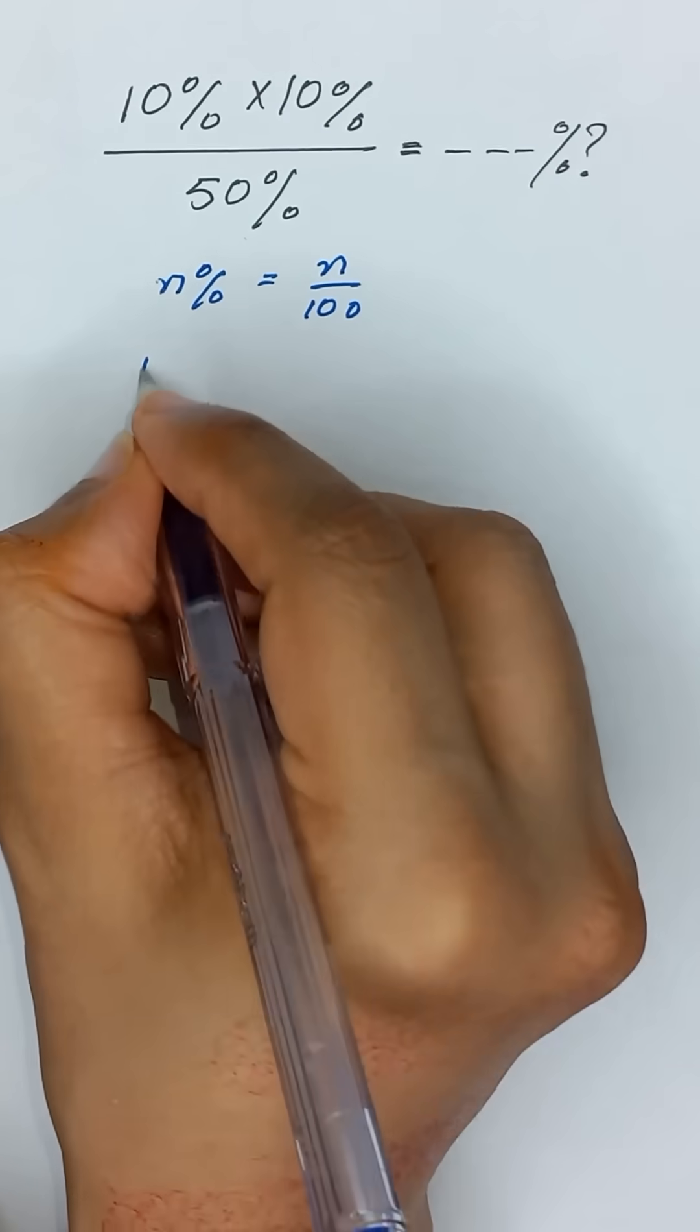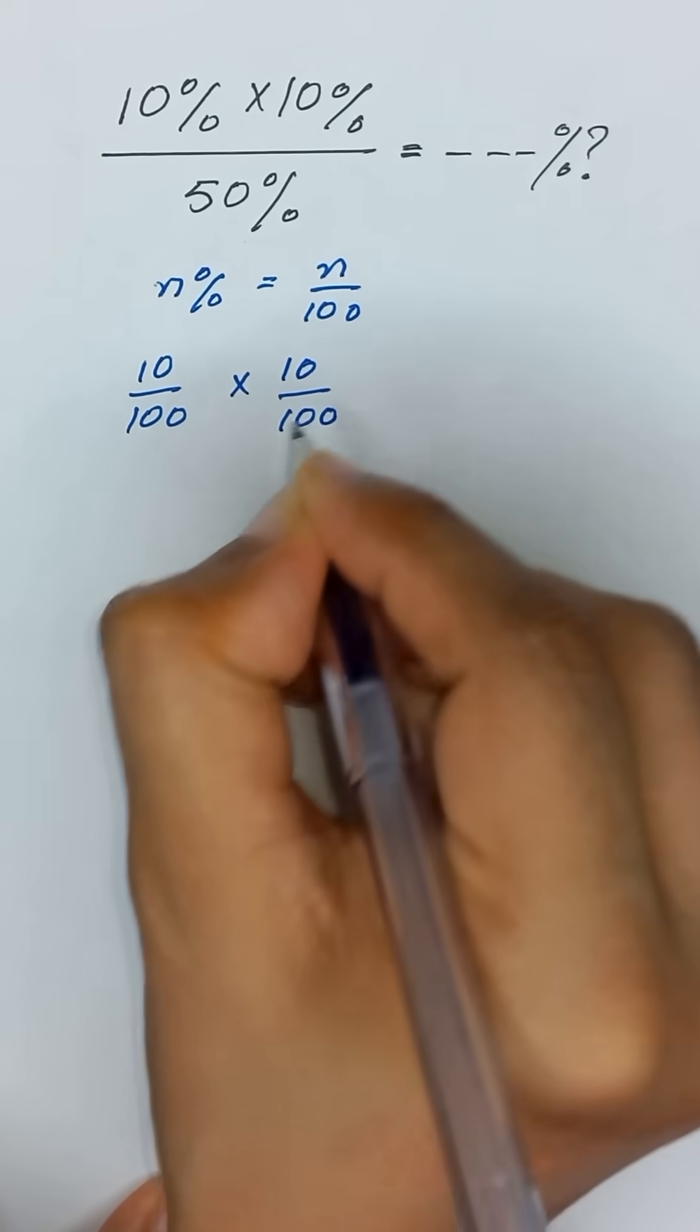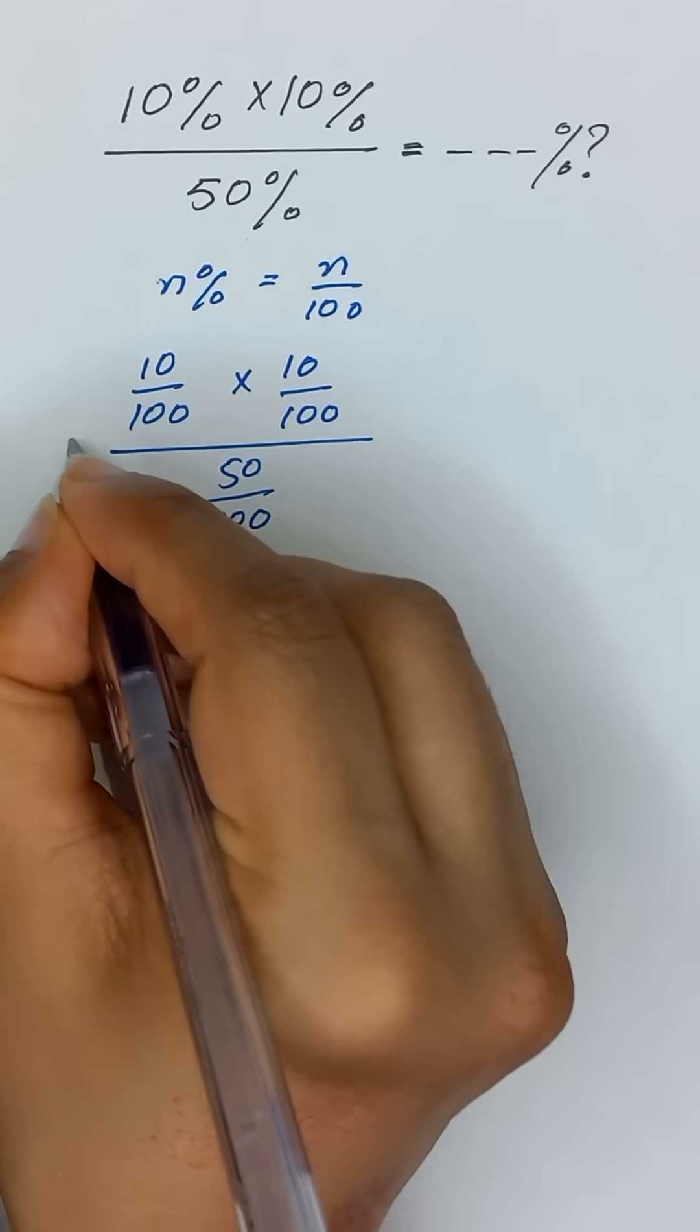So it will become 10 divided by 100, multiply 10 divided by 100, divided by 50 divided by 100.